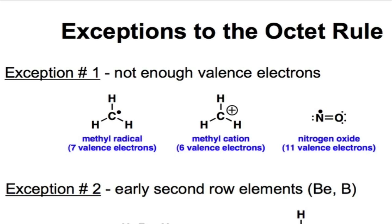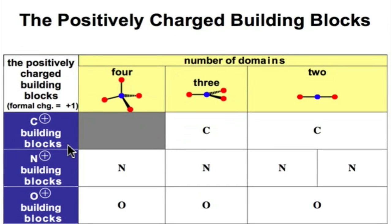And so let's add that to our building block list, because this exception is actually fairly common as a reactive intermediate. So here's the first row that we skipped over before. Now it's impossible to have 4 electron pair domains and have a formally charged carbon. So that box is out.